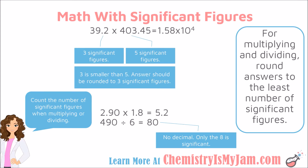The rule for multiplying and dividing is different. Instead of counting places after the decimal, you are going to round to the least number of significant figures. You are going to count the number of significant figures in each value, and whichever is the smallest represents how many significant figures your answer should have. In this case, I have 39.2, which has three significant figures, multiplied by 403.45, which has five significant figures. Three is smaller than five, so my answer needs to be written with only three significant figures.